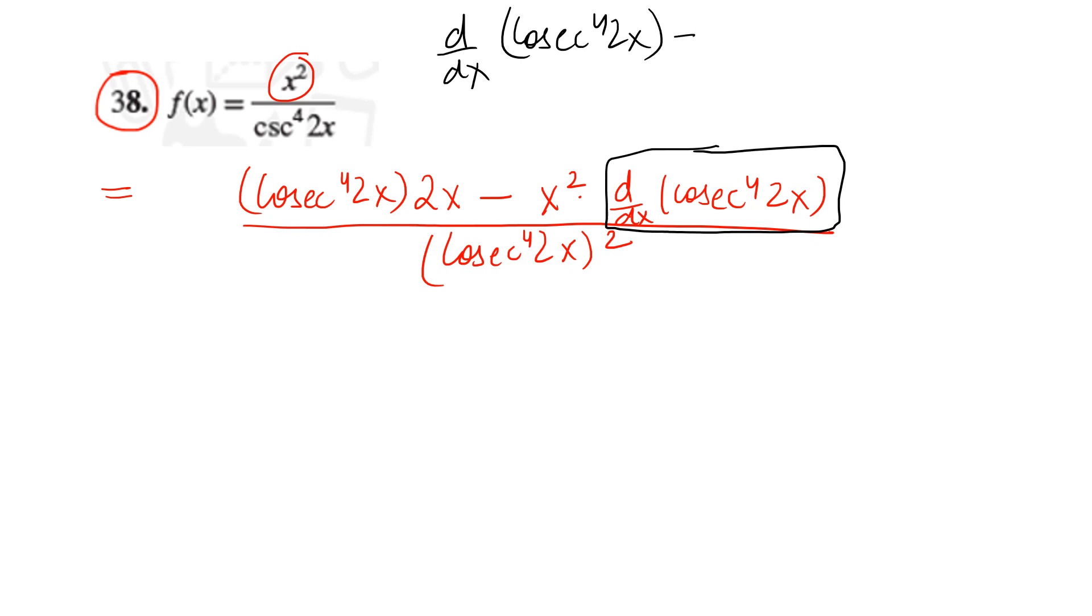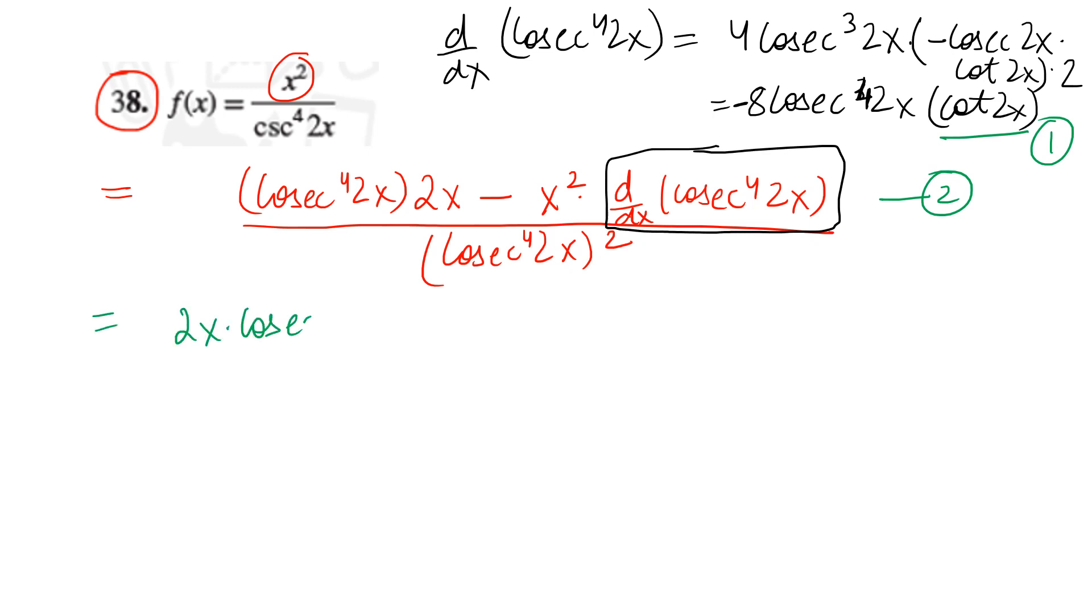The denominator cosecant⁴(2x) is raised to the power 2. In the numerator, denominator is as it is and you differentiate the numerator. You differentiate x² you get 2x, then you subtract x² as it is and you do d by dx of cosecant⁴(2x). Now I want to explain this derivative in detail and then we will substitute here. Let's find d by dx of cosecant⁴(2x).